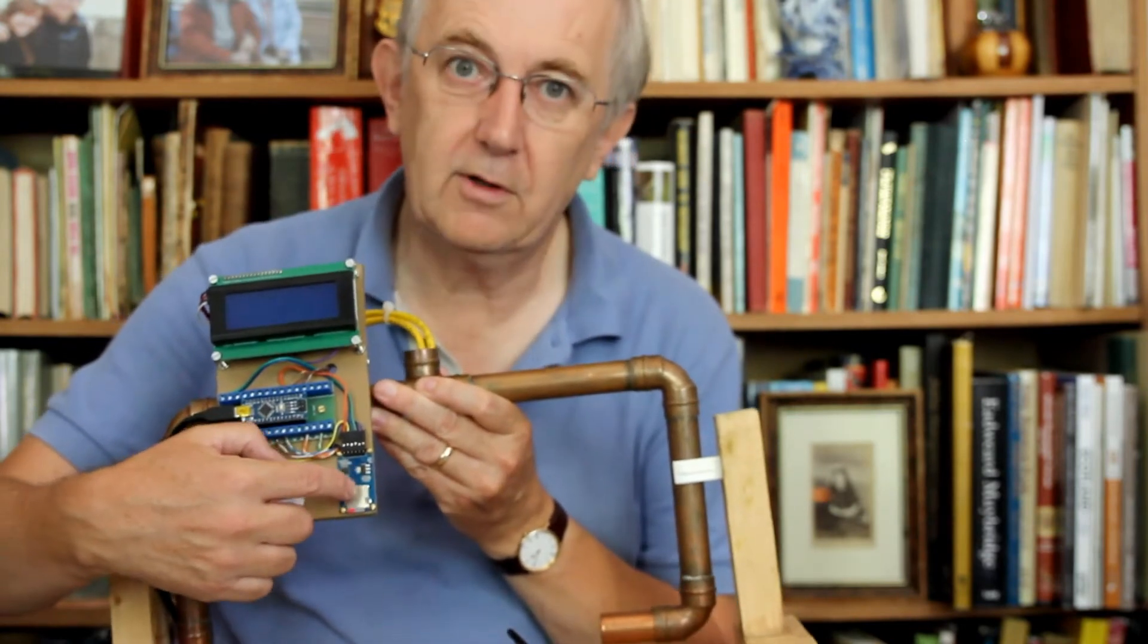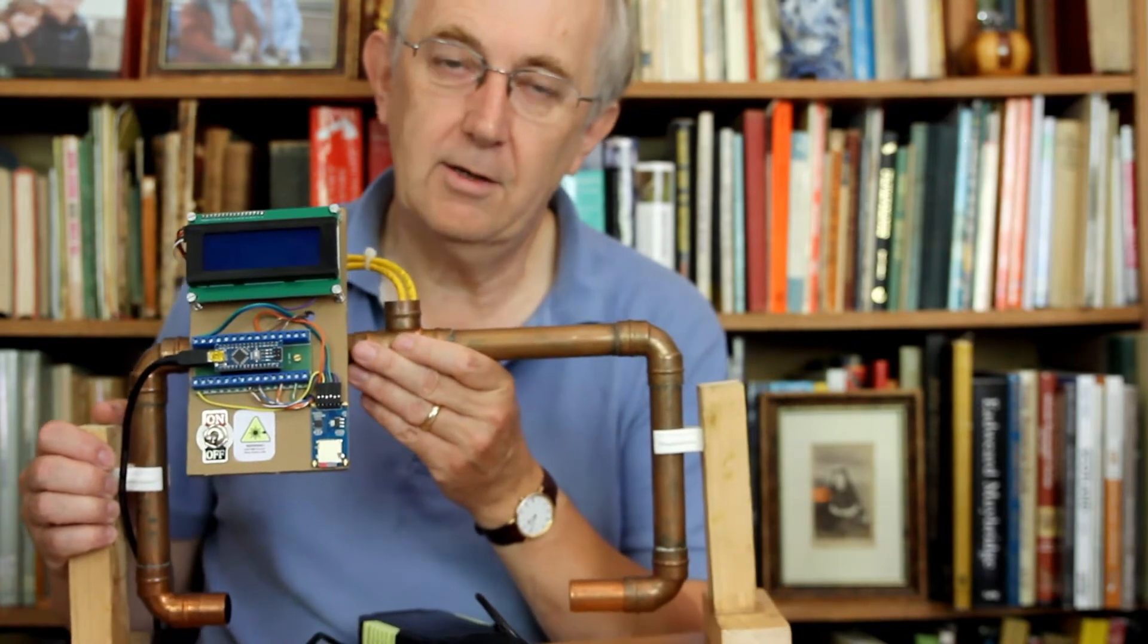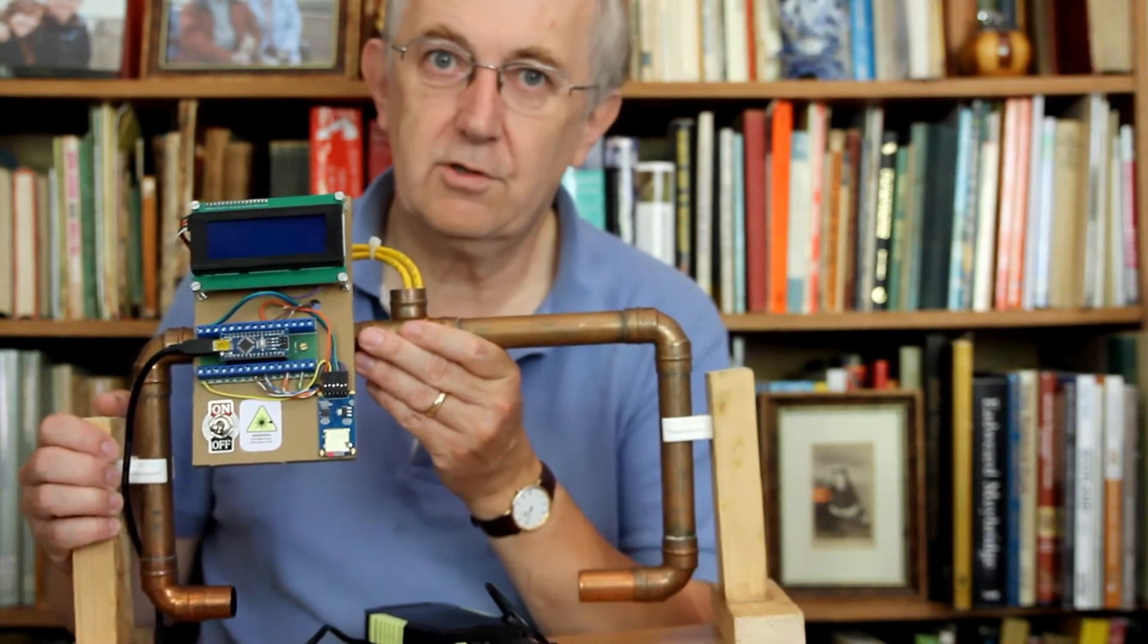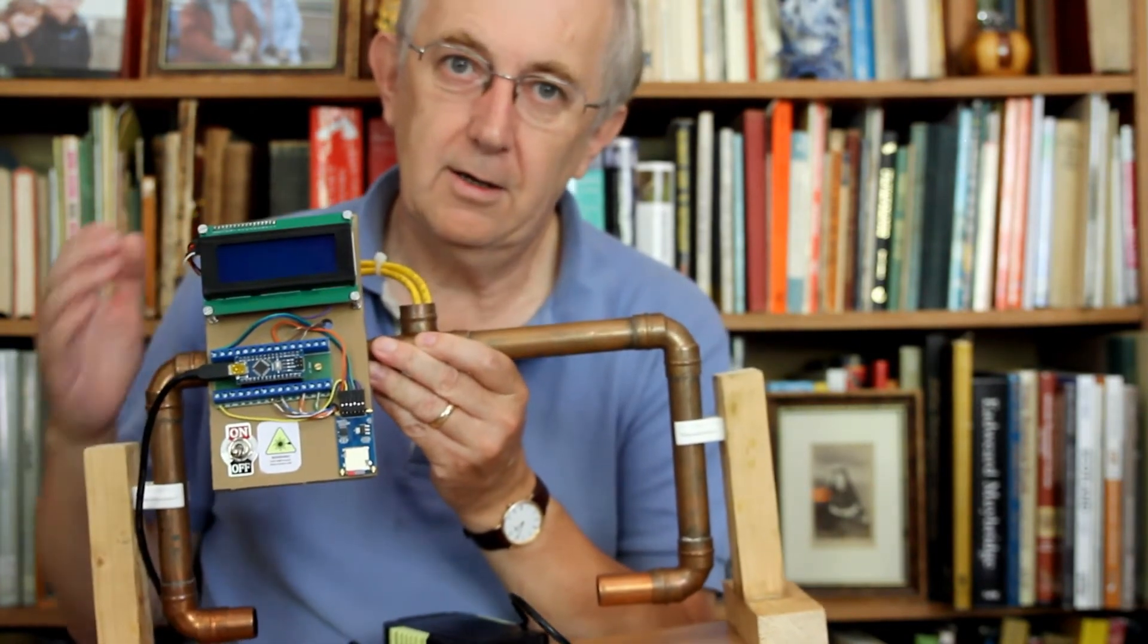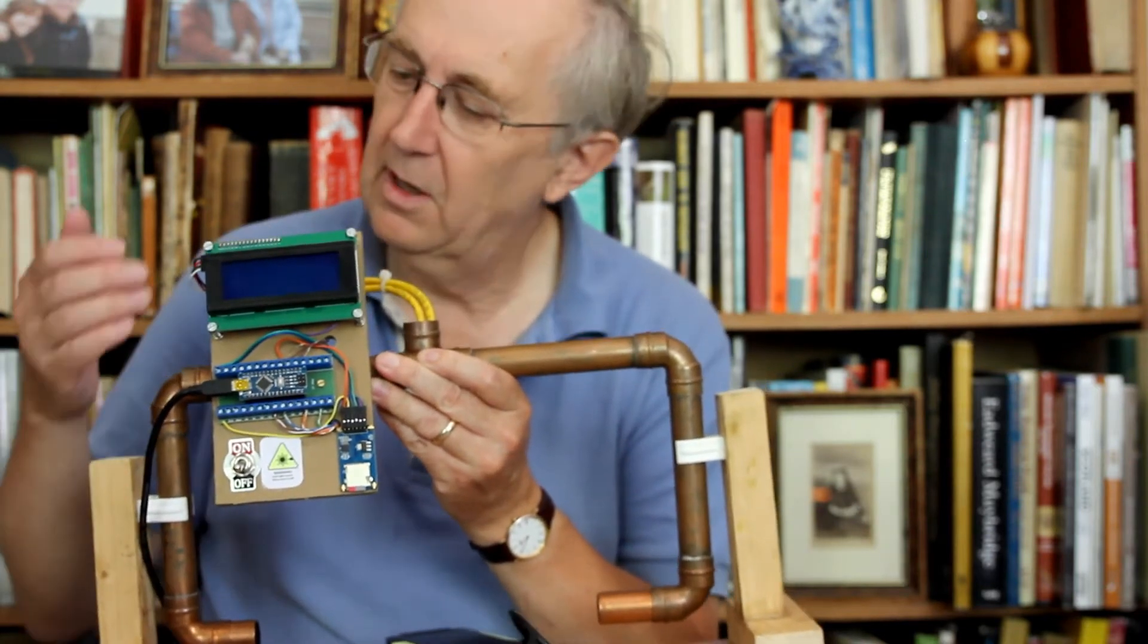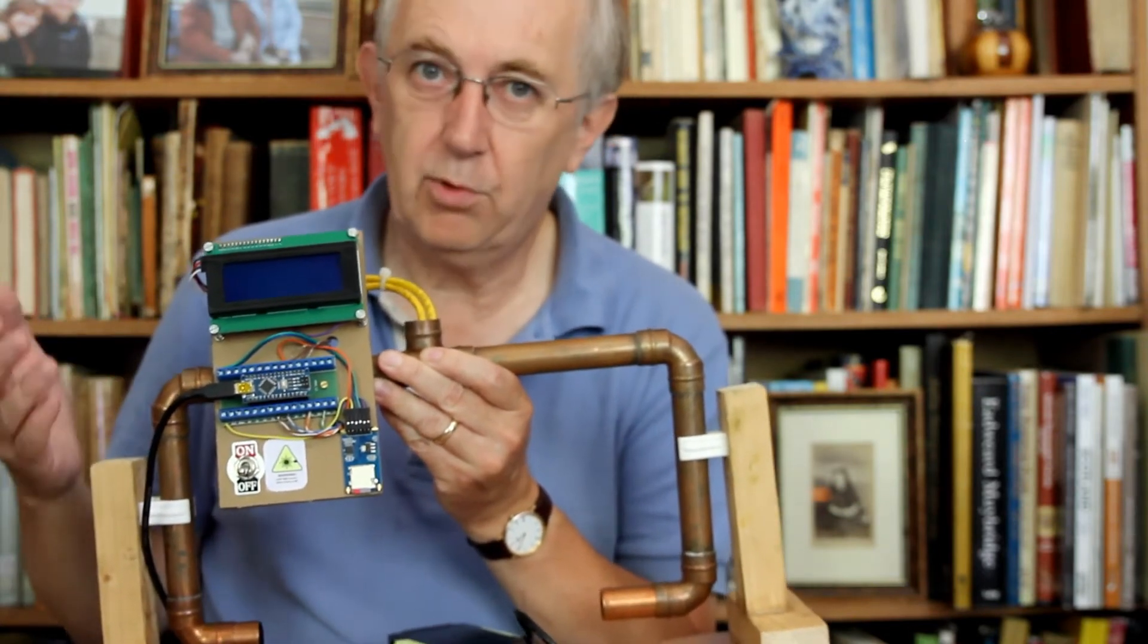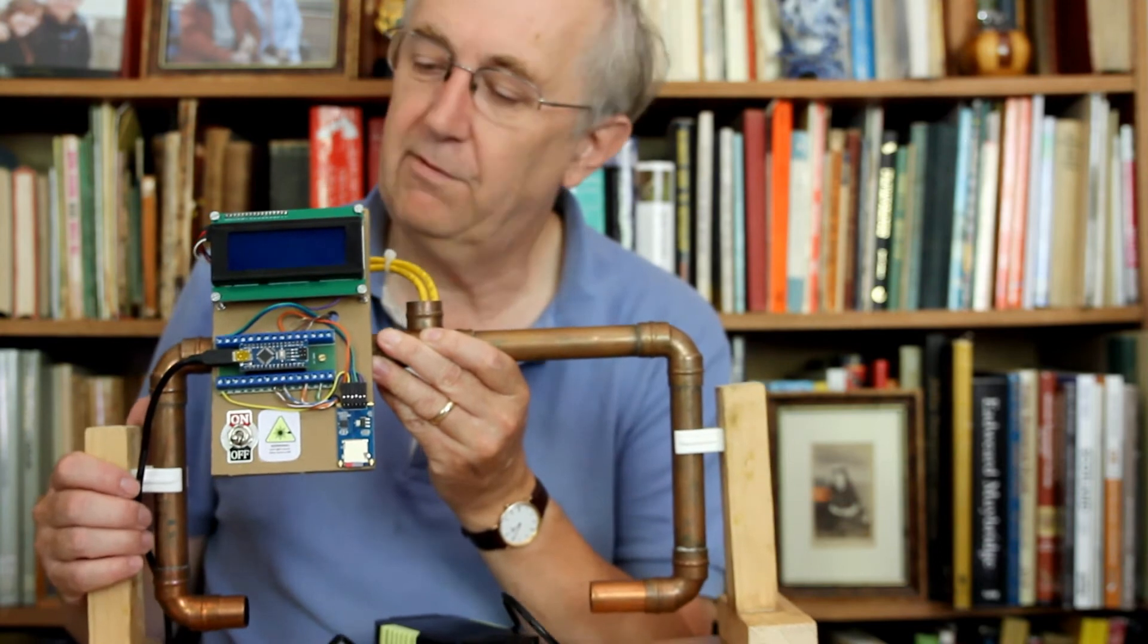And down here in the corner we've got a data logger so you can put a camera in here. You can say do a dozen shots through on the setting that you're interested in testing, 125th or 60th. As you do it the software will work out what the nearest speed is, so it'll probably work out that you're aiming for 125th.